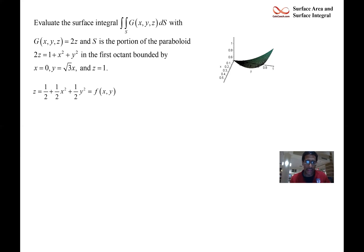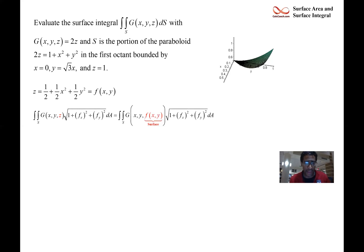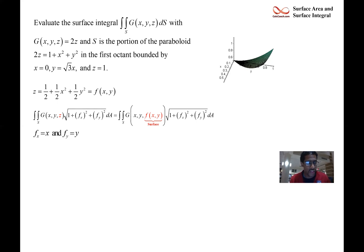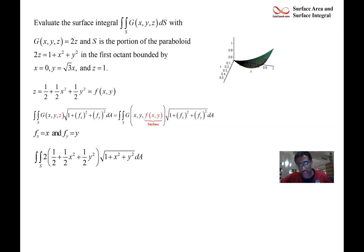With z given explicitly as f(x,y) = ½ + ½x² + ½y², we compute ds. We take the partial derivatives: the partial with respect to x is just x, and the partial with respect to y is just y. Squaring these and adding one gives √(1 + x² + y²), then multiply by dA. For the function g = 2z, we replace z with the surface formula: 2·(½ + ½x² + ½y²), which simplifies to 1 + x² + y².